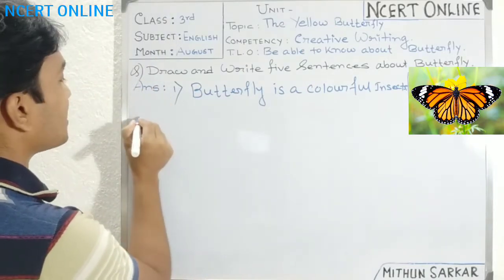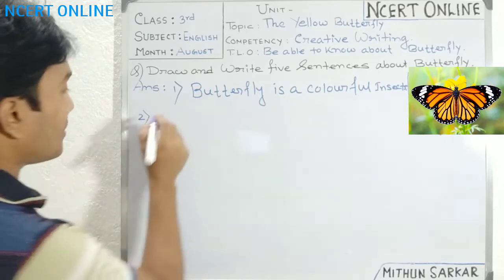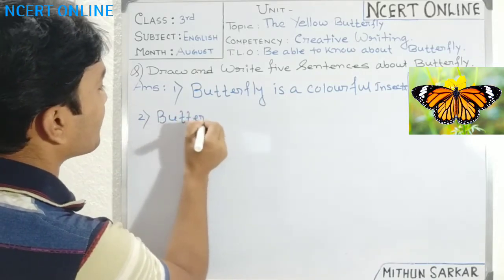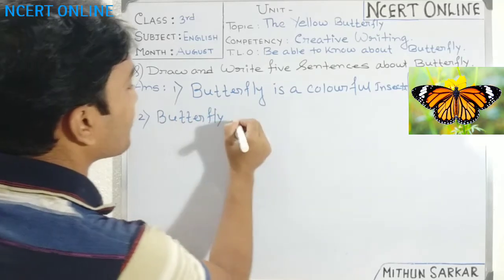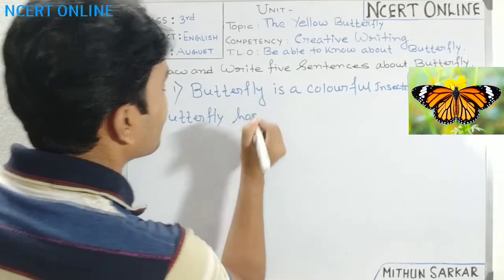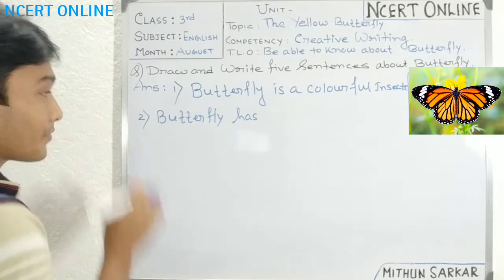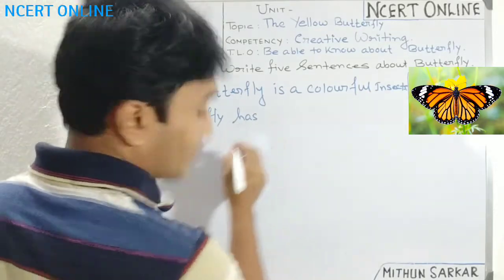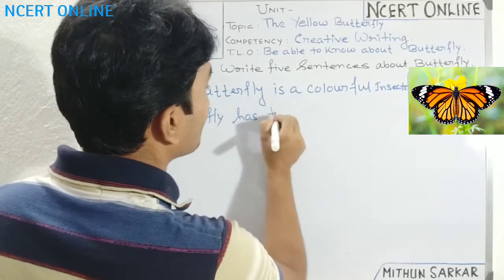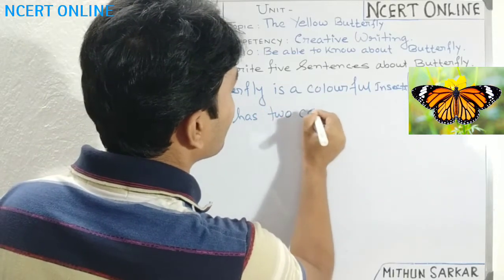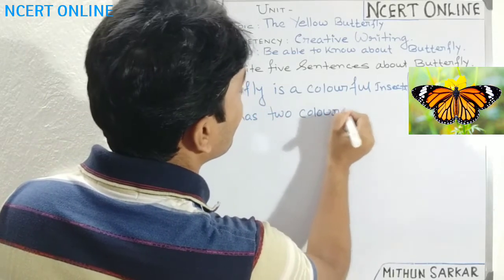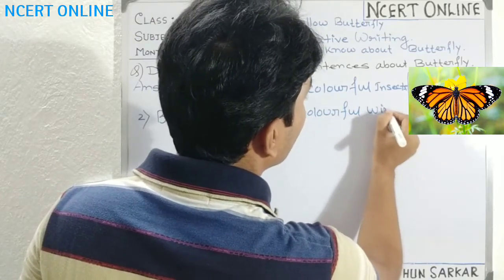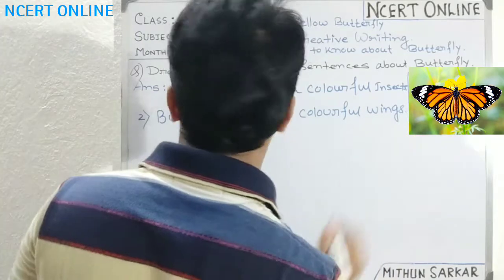Then we can write number 2. Butterfly has — when it is butterfly, singular form, it is always 'has.' Butterfly has two colourful wings.